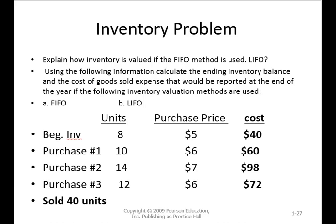How many units are left over at the end of the period? If we bought 44 and we sold 40, that must mean there are four units left. In FIFO — first in, first out — the last four units are left from the last purchase at $6. So the ending inventory is $24 (four units times six). And the cost of goods sold is the $270 total minus the $24, so cost of goods sold is $246.